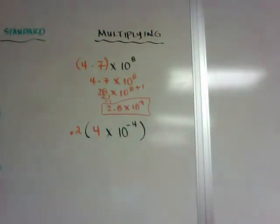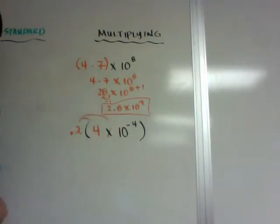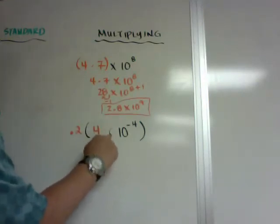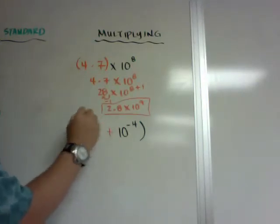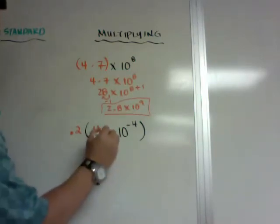Be careful. A common mistake people try to do is they try to distribute this in and it doesn't work because this is multiplication. If there is a plus sign or a minus sign, if this was a plus sign, then you could distribute. But because it's a times sign, you just multiply it straight across.